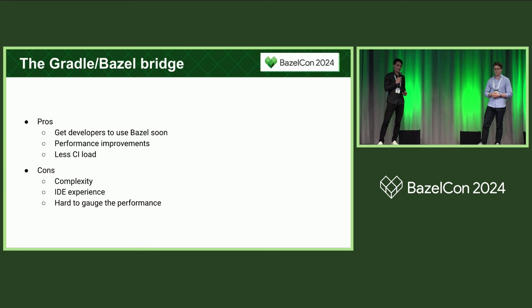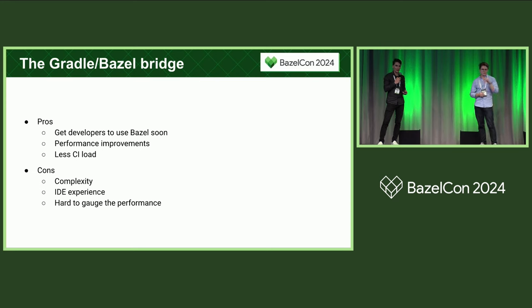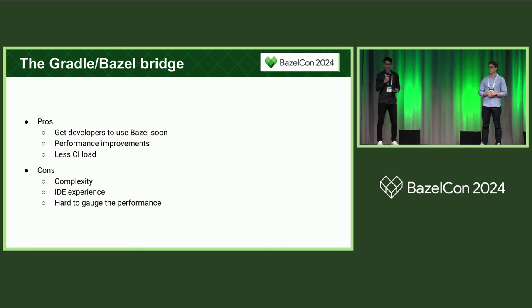This approach had a few advantages. One was that we got developers using Bazel really quickly. We got to see what issues there were, how well it worked, what features were missing, and we added those features one by one. We also saw some performance improvements pretty quickly, and there was generally less load on CI compared to approaches where you run the legacy build system and Bazel in parallel for some time.